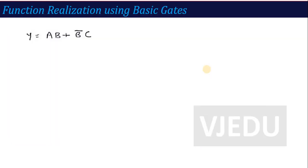Let's start with an example. The given function is y = AB + B̄C. You have to design a digital circuit that performs this output — the output is high when A·B is high or when B̄·C is high, because here it is a plus (OR) operation.